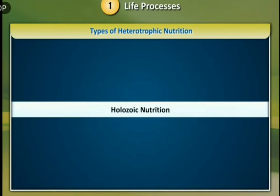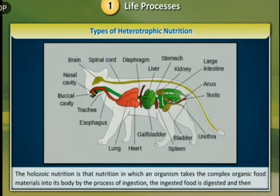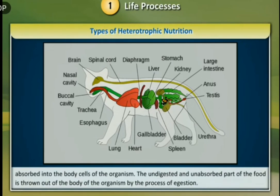Holozoic nutrition is that nutrition in which an organism takes complex organic food materials into its body by the process of ingestion. The ingested food is digested and then absorbed into the body cells of the organism.